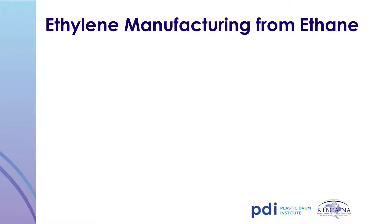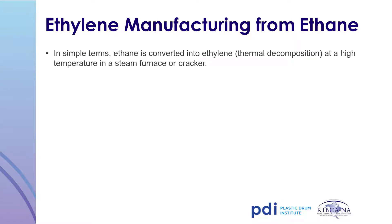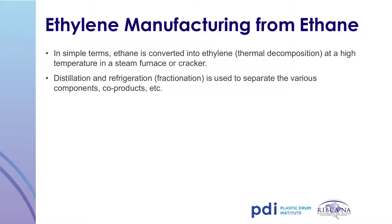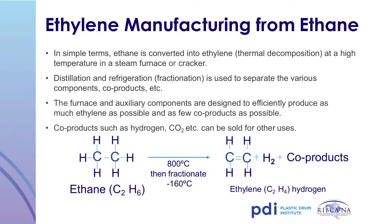This slide illustrates in more detail how ethylene is formed from ethane. Ethane is subjected to thermal decomposition, and after ethylene is formed, it can be fractionated or separated into various components and co-products, which can be sold for other uses. Distillation and refrigeration fractionation is used to separate the various components. The furnace and auxiliary components are designed to efficiently produce as much ethylene as possible and as few co-products as possible.